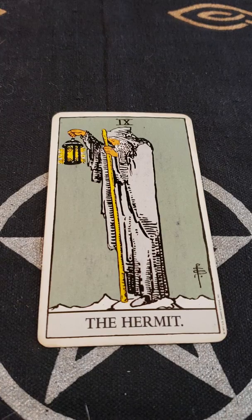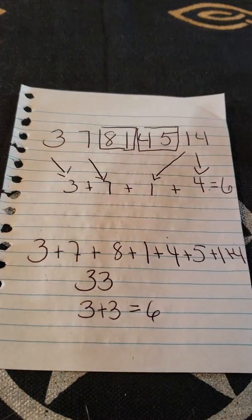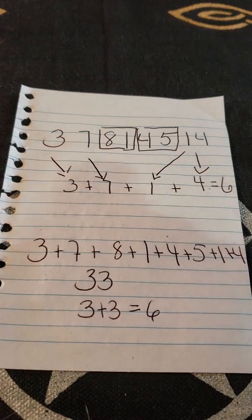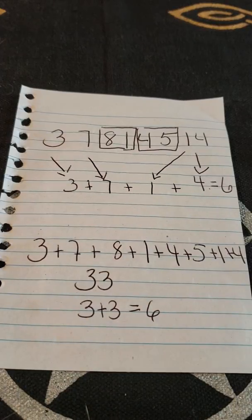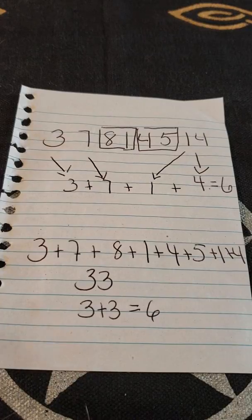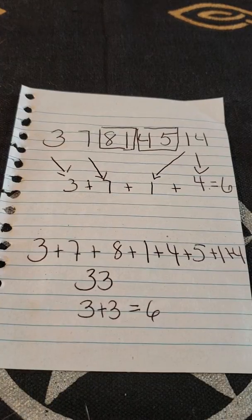Let me just show this to you really quick. I made a little picture about how nine and zero are equal. If you take a big number — 3, 7, 8, 1, 4, 5, 1, 4 — and you take out all the digits that equal nine, so we took out the 8, the 1, the 4, and the 5, and then add 3 plus 7 plus 1 plus 4, you get 6. If you keep all those numbers that equate to nine and add them together, you're still going to get 6. So nine in that case is like zero — you could take it out, completely disregard it, and you'll still get the same answer. It's a really cool concept.